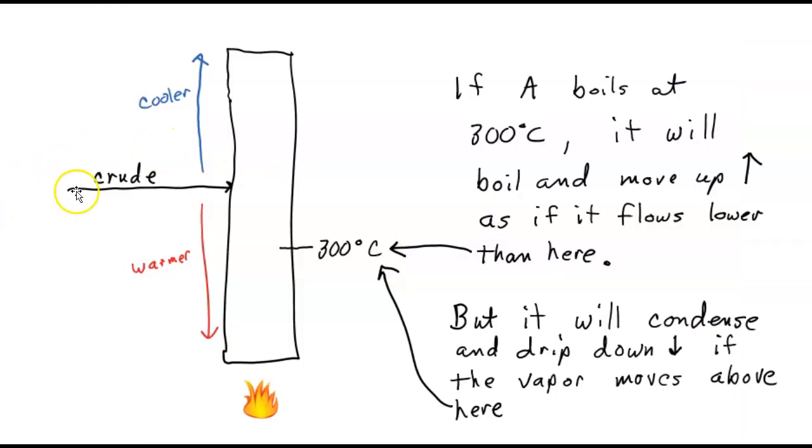And the way they work is you pump your crude oil into the middle of somewhere and you heat the bottom. And so it's hottest down here and coldest up here. And the crude oil is going to come in here and start dripping down. And as it gets down lower, it gets hotter. Some things are going to boil and go up. And then some of the things that are boiling and going up, as it gets cooler, they're going to condense again and fall down.